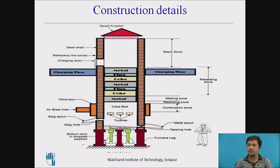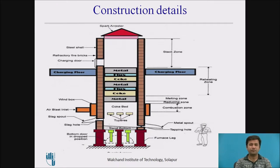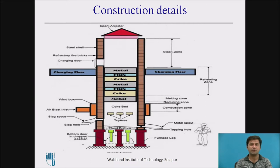Now let us explain the construction details of the cupola furnace. As you can see, there is a shell-type lining made of steel with a diameter of around 0.5 to 2.5 meters. Small cupola furnaces are called cupolites, and large ones are called cupolas. Metal, flux, and coke are placed in alternate layers. At the bottom left is the slag spout — the slag is always at the top compared to the metal port because slag is lighter in weight.